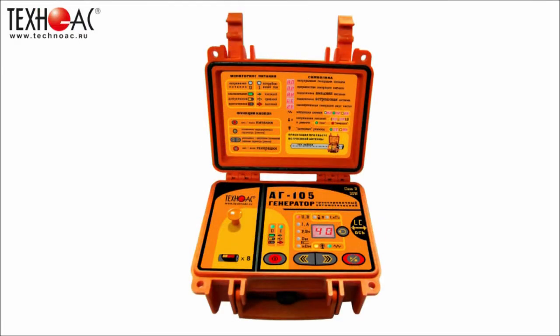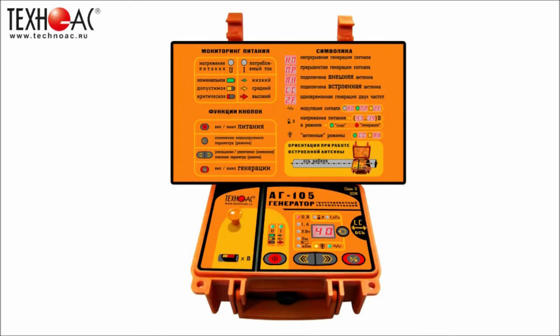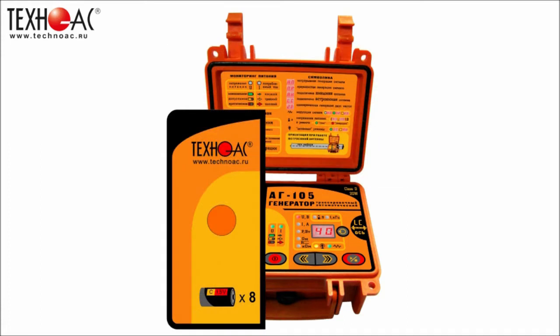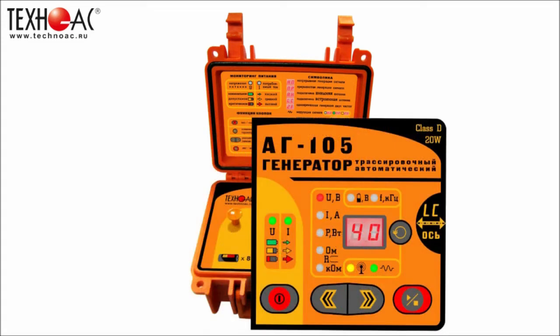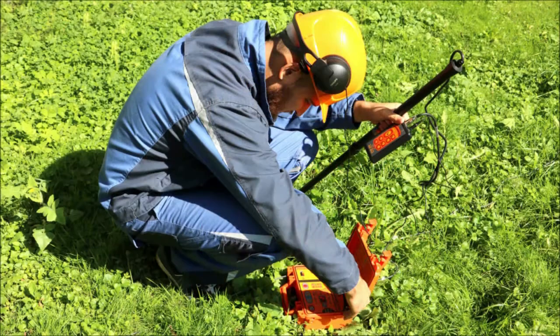The device consists of an information panel on the inner side of the cover, a battery holder with handle in the center for removing, and a push button and LED indication panel. The AG105 is the best in class of portable communication locating transmitters with low power autonomous power supply in terms of qualitative characteristics, namely power, operating life, dimensions, and weight.